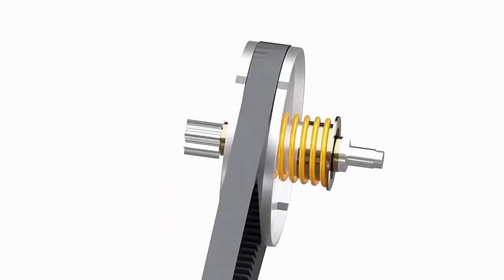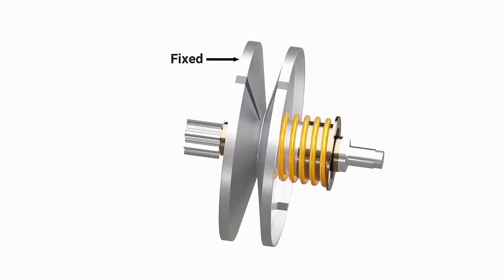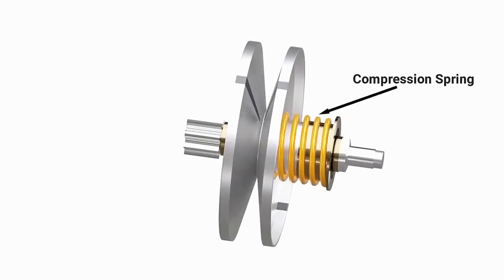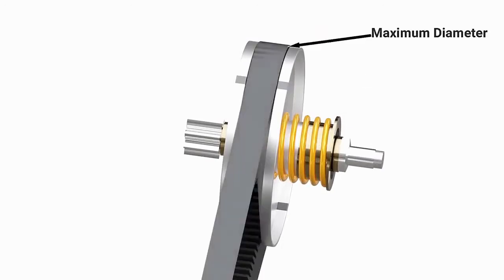The rear side also has two conical plates between which the belt runs. One of these plates is fixed to the shaft, while the other can slide sideways. A compression spring forces the sliding plate to stay close to the other plate. This forces the belt to stay at the highest diameter of this pulley.